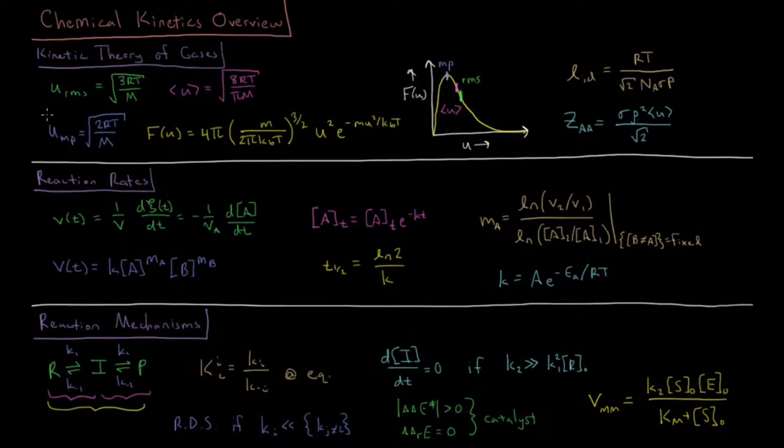There are also different metrics for the average speed called the root mean squared average speed which is you take the average square speed and take its square root which is square root of 3 times gas constant times temperature over molar mass.